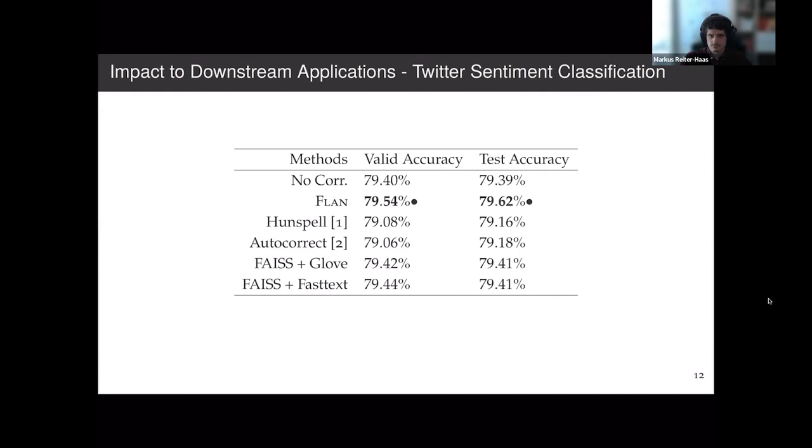So our algorithm, when compared to the baseline, attained a 0.1 improvement on the validation, and then 0.2 improvement on the testing.